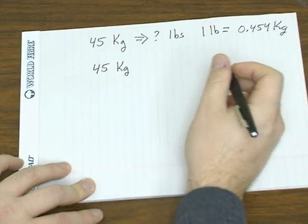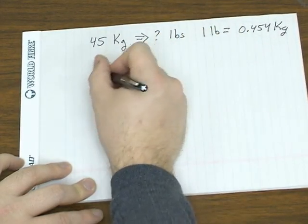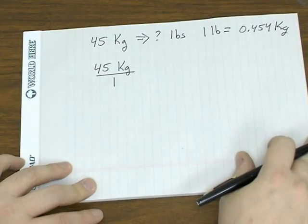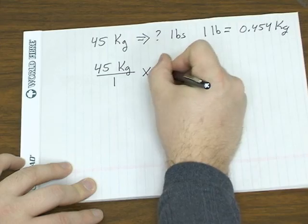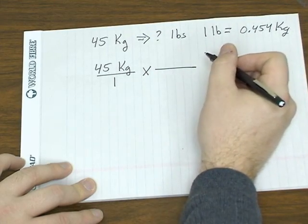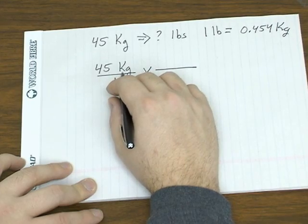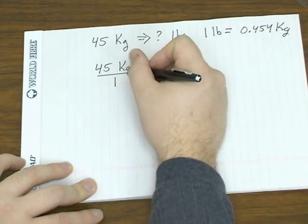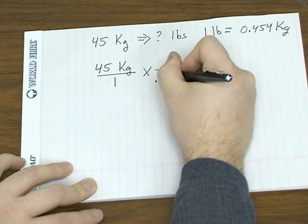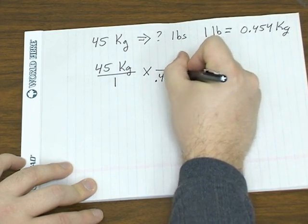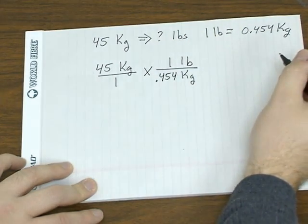So you got 45 kilograms, which, again, you can write as a fraction, that number over 1. We want to multiply it by our conversion factor, where the kilogram unit cancels out. So that means, since the kilogram unit's on the top here, it needs to be on the bottom. So it's 0.454 kilograms for every 1 pound.